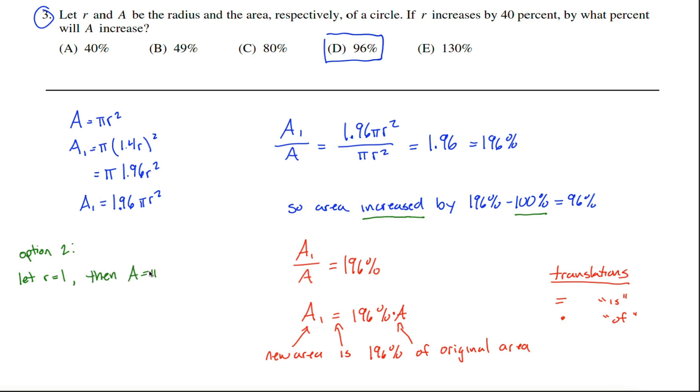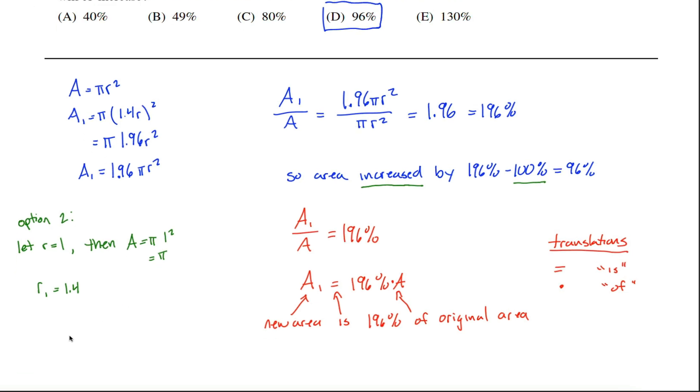Then A would be equal to pi times one squared, in other words, pi. And our new radius, maybe R1, would be equal to 1.4, right? 40% more than one. I guess we could go through this same logic. If it increased by 40%, then it's 140% of, remember, of means multiply. The original value of R, which was 1, our new value of R is equal to 1.4.